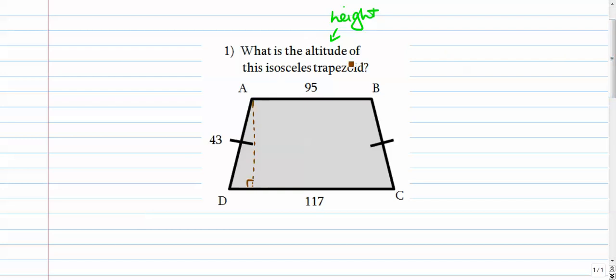So the altitude of this isosceles trapezoid is gonna be here. Let's call it a, lowercase a. Since this is isosceles, I do know that 43 is over here and it's over here. That's important.